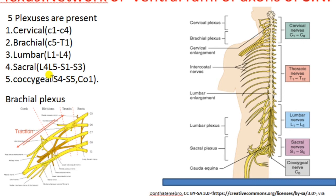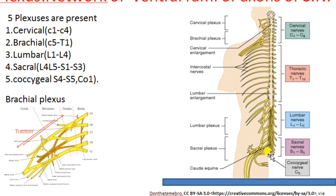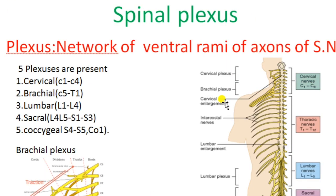The coccygeal plexus is formed by the ventral rami of sacral spinal nerves S4 and S5, and coccygeal spinal nerve Co1. These three spinal nerves unite to form the coccygeal plexus, which supplies fibers to a small area of skin in the coccygeal region. It is important to remember which spinal nerves form each plexus and the regions they supply.